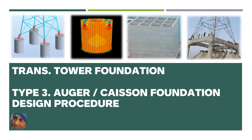Welcome viewers. In this video we are going to look at the design procedure for transmission line tower foundation. This is a Type 3 auger or caisson foundation. So far we had discussed about two other types: the first one is pad and chimney, and the second one is a raft foundation. This is the third type, and we are going to look at other types also like steel grillage, pile foundation, and rock anchors in upcoming videos.